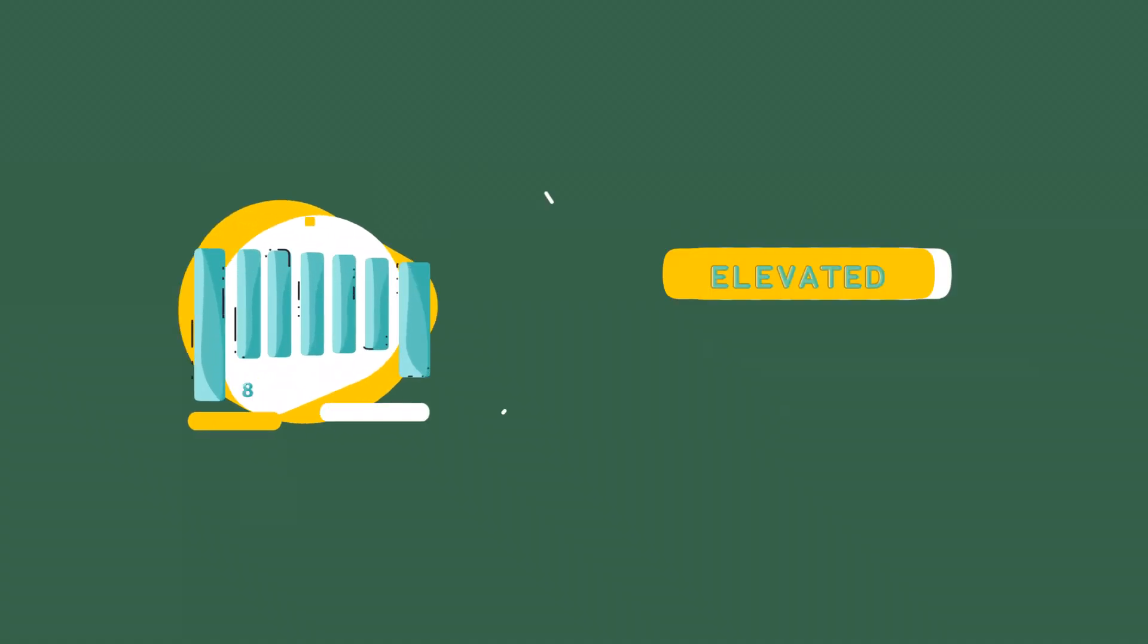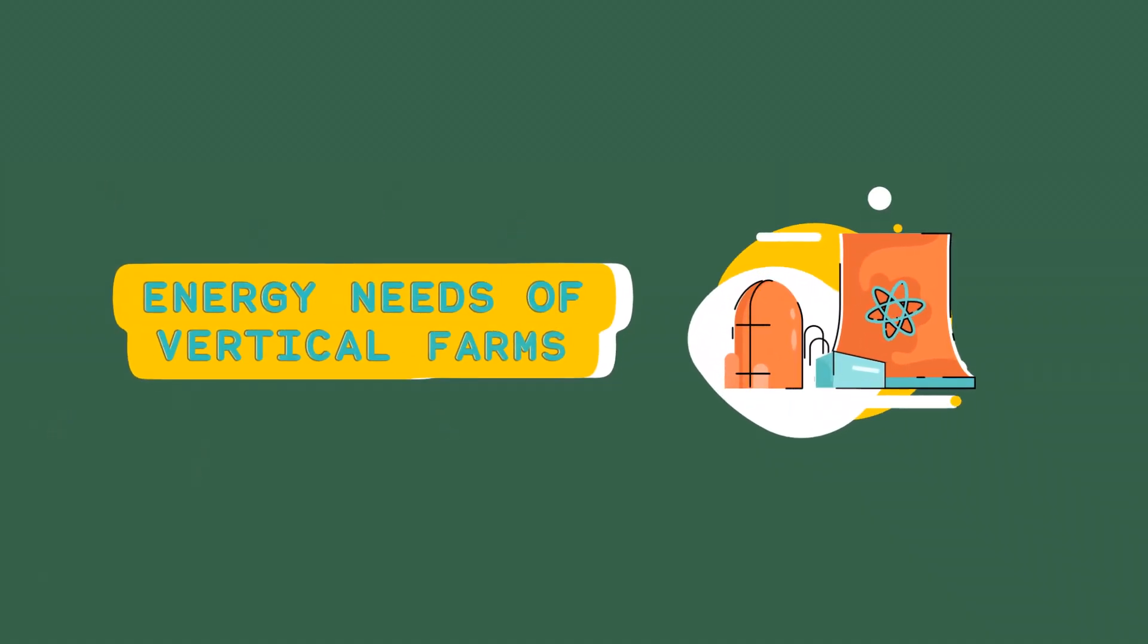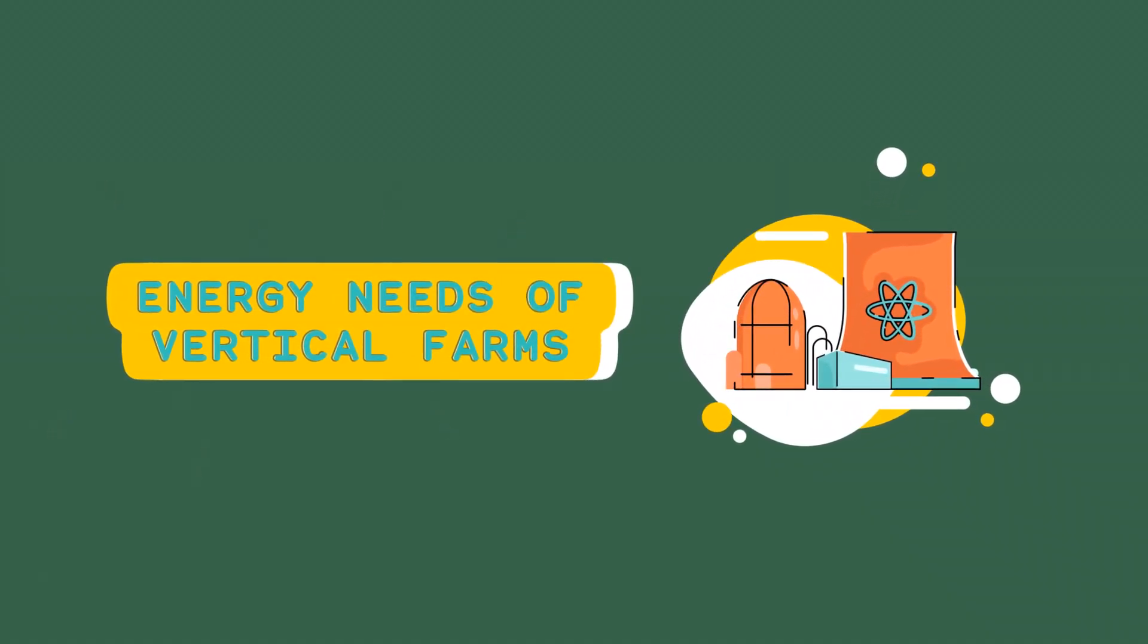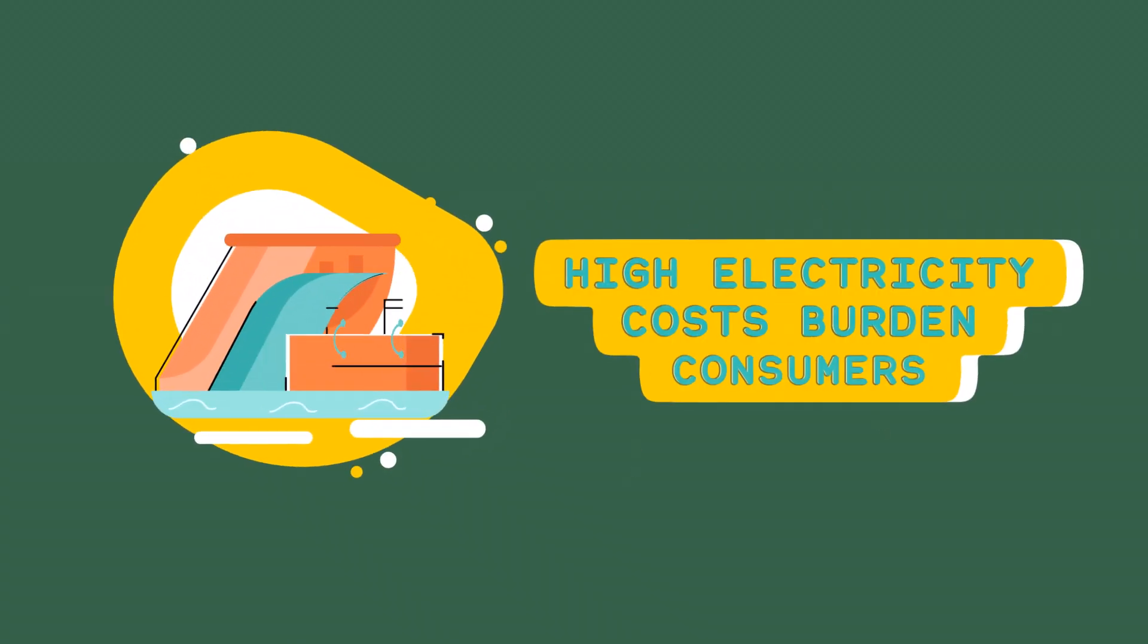High operational costs. Energy consumption. Vertical farms require substantial energy for lighting, temperature control, and nutrient delivery systems. The cost of electricity can be a major financial burden.